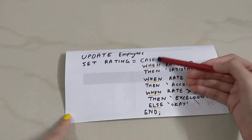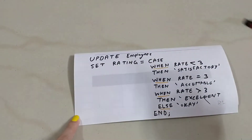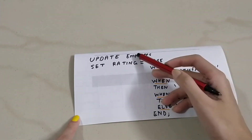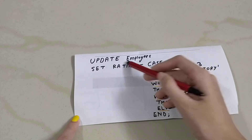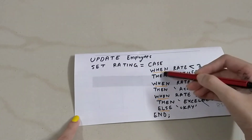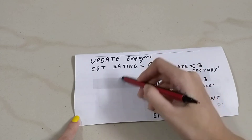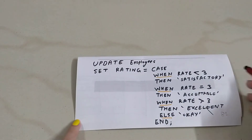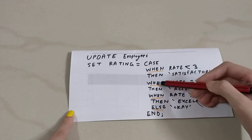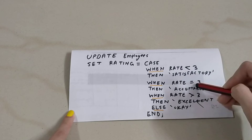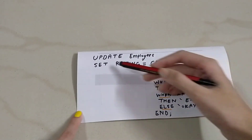The last example shows CASE used inside an UPDATE statement. UPDATE employees SET rating = CASE WHEN rate < 3 THEN [value], WHEN rate = 3 THEN [value], WHEN rate > 3 THEN [value] END. Here, employees is the table name and rating is the column being updated. Whichever WHEN condition is true, that value will be written into the rating column for each row in the employees table.